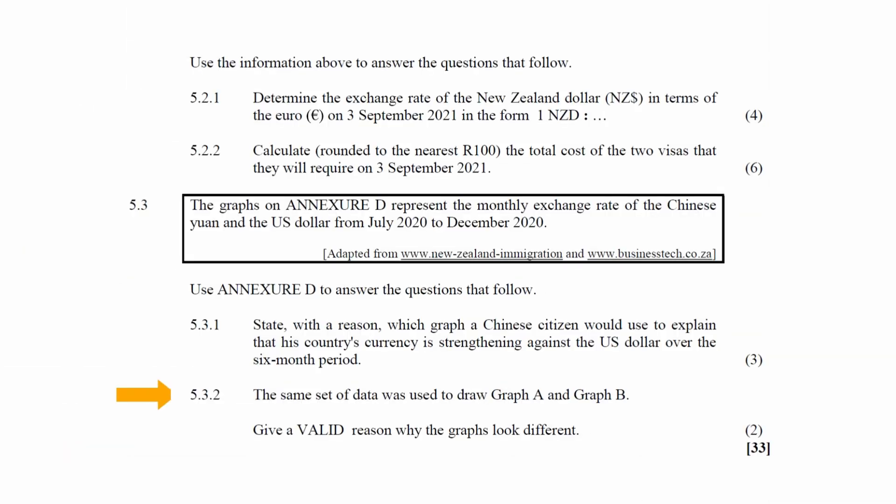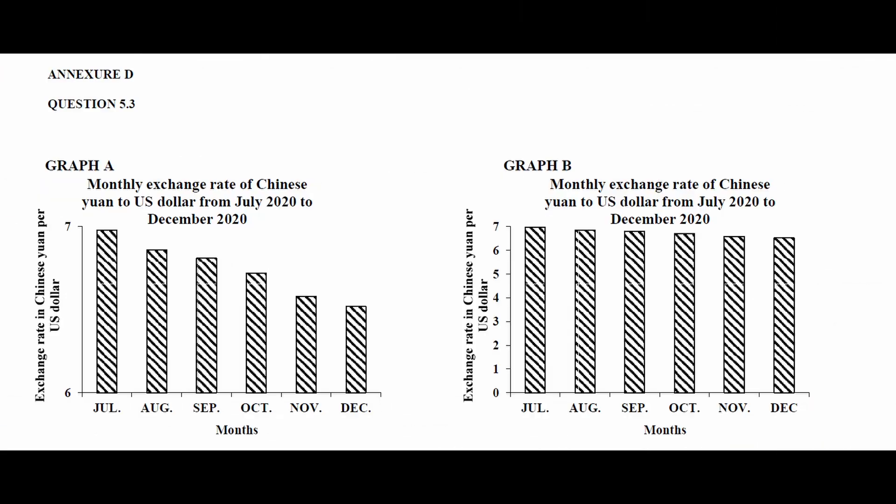In question 5.3.2, it is stated that the same set of data was used to draw both graph A and graph B. You have to give a valid reason why the graphs look different. The reason these graphs look so different is because different scales were used to draw each of them.